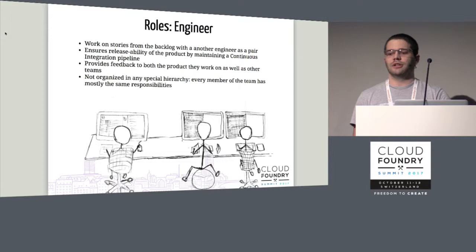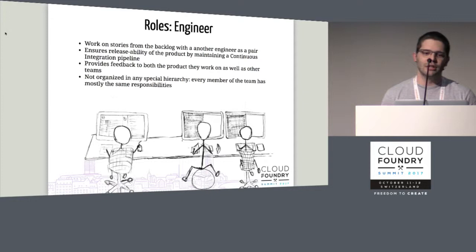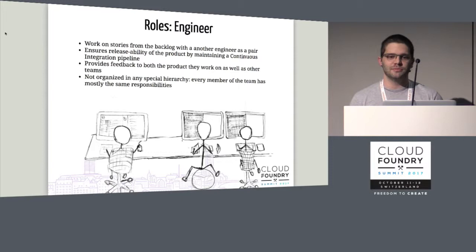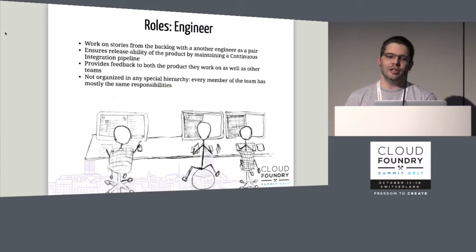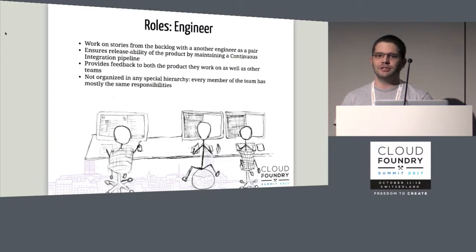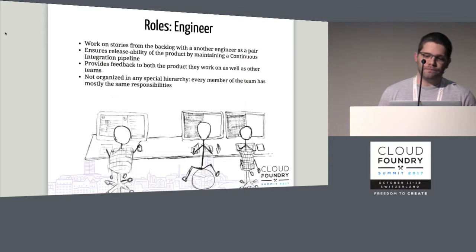Teams are also composed of engineers. We actually compose teams in pairs of engineers, not in individuals, because we do pairing for everything — for every development story we work on. So you're going to have at least one pair of engineers on any given team. Their responsibilities include working on the stories the PM prioritized and ensuring the product is always releasable by maintaining a continuous integration pipeline. As members of the community, engineers are in a great position to provide feedback not only to their own projects but to the teams they interact with.